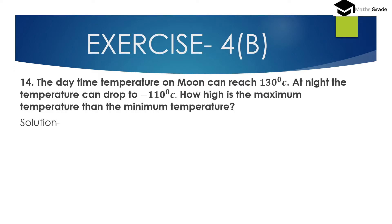Now question number 14. This is a word problem. The daytime temperature on the moon can reach 130 degrees centigrade. At night the temperature can drop to minus 110 degrees centigrade. So how high is the maximum temperature than the minimum temperature? Daytime temperature on the moon can reach 130 degrees centigrade and night temperature drops to minus 110 degrees centigrade.